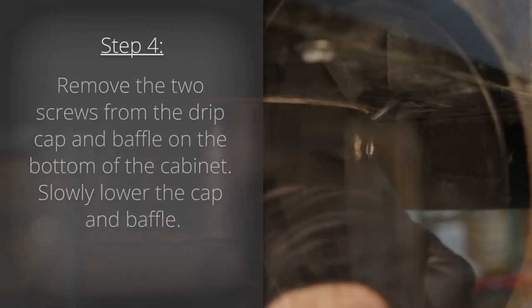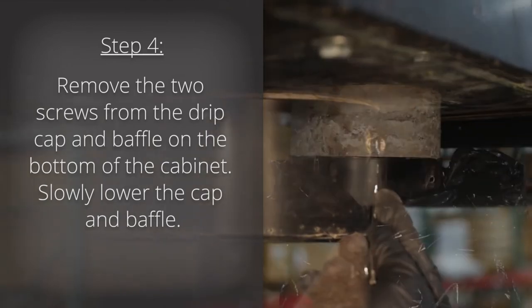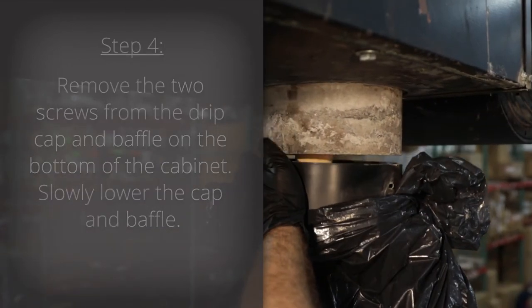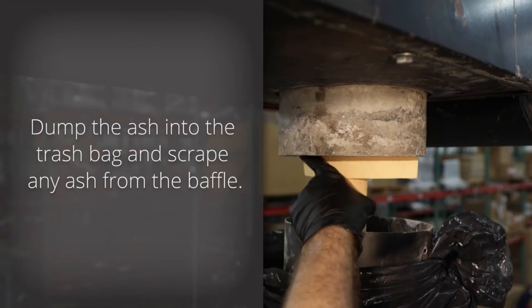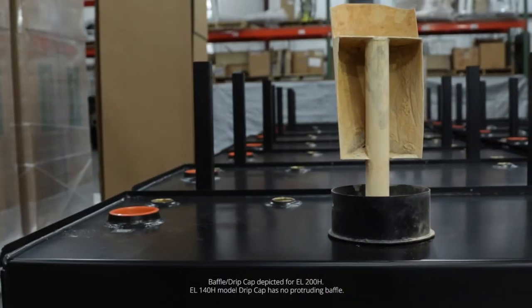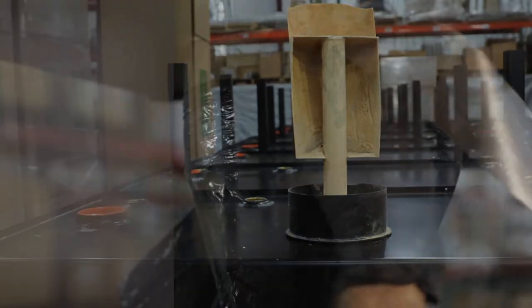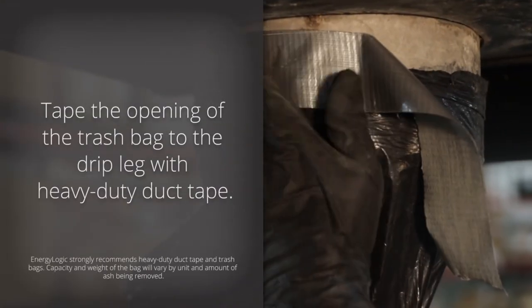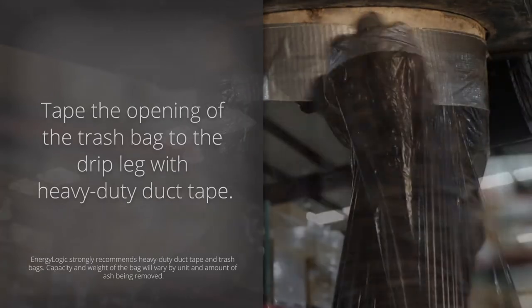Step four, remove the two screws from the drip cap and baffle on the bottom of the cabinet. Slowly lower the cap and baffle. Dump the ash into the trash bag and scrape any ash from the baffle. Then tape the opening of the trash bag to the drip leg with heavy duty duct tape so ash will be contained in the trash bag.